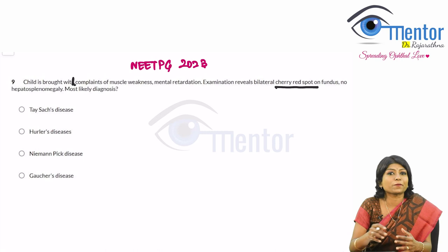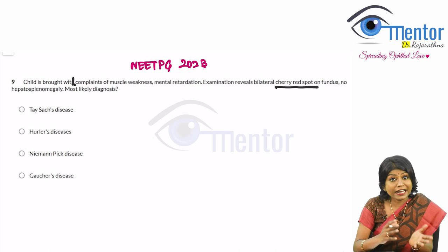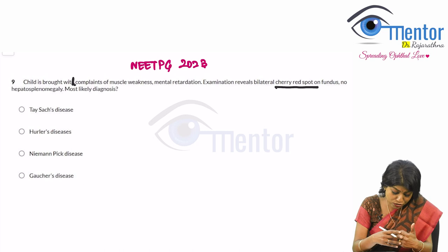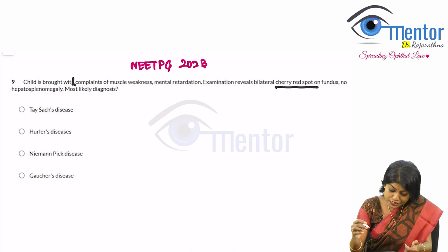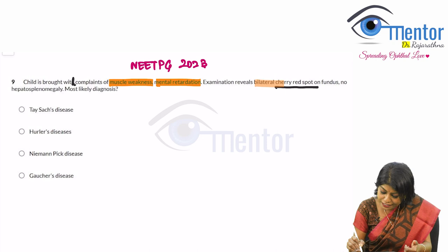This topic is about cherry red spot on fundus, which is a very important question that can come with or without an image. In this exam there was no image. The question describes a child brought in with complaints of muscle weakness, mental retardation, and bilateral cherry red spot on fundus with no hepatosplenomegaly. What is the most likely diagnosis?